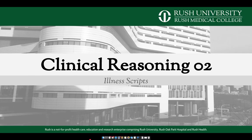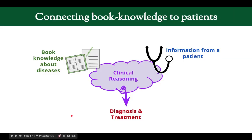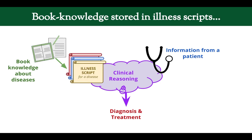Welcome to this video on illness scripts. This is the second video in our clinical reasoning video series. Clinical reasoning is the way that you connect information that you get from a patient and the information collected from books — your book knowledge about diseases — and use that to come up with a diagnosis and treatment plan for your patient. That book knowledge is stored in something called an illness script, and that's what this video is about.